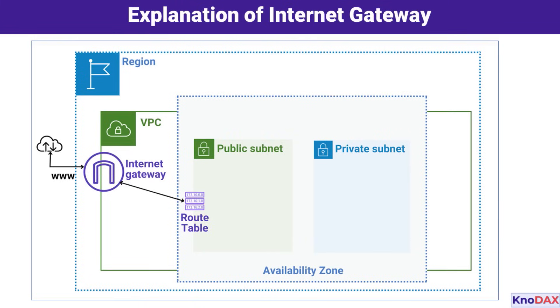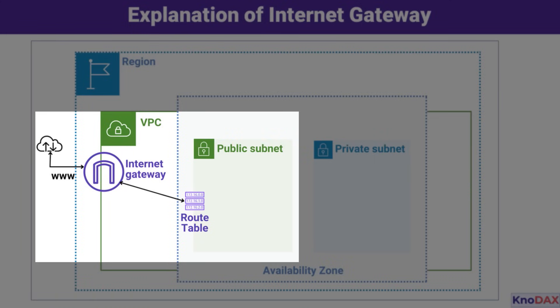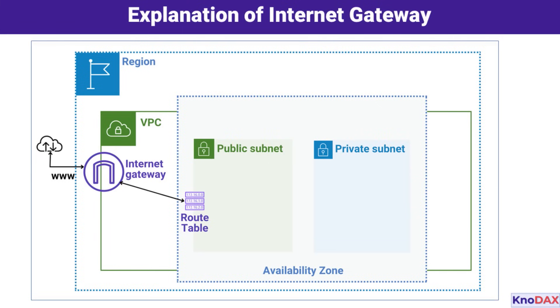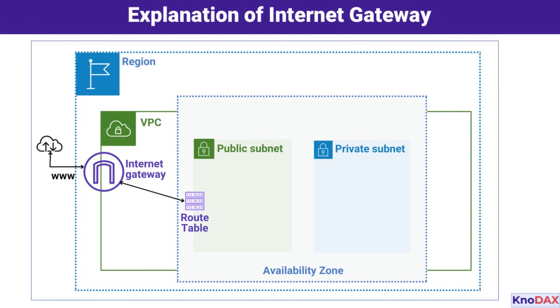Inside the VPC, we see two types of subnets: public and private. Resources in the public subnet, such as EC2 instances, can access the Internet via the Internet Gateway. On the other hand, resources in the private subnet are isolated from direct Internet access, which enhances security for sensitive workloads. However, simply attaching an Internet Gateway to your VPC doesn't automatically grant Internet access. You need to configure the route table for the public subnet to direct traffic destined for the Internet to the Internet Gateway. Without this configuration, your resources won't be able to communicate externally.